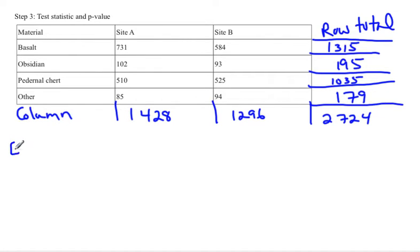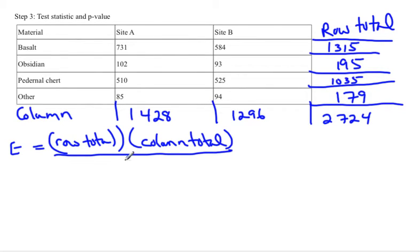We also know that there were 1,315 items that were basalt, 195 items that were obsidian, 1,035 that were pedernal chert, and the last one is there was 179 that was some other material that wasn't specified, and altogether there were 2,724 different items that were included. The reason we need that was that it helps us to come up with the expected values.